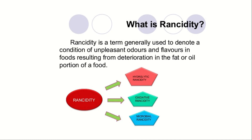Summary of rancidity: rancidity is a term generally used to denote a condition of unpleasant odor and flavor in food, resulting from deterioration in the fat and oil portion of the food. There are three types of rancidity — hydrolytic rancidity, oxidative rancidity, and microbial rancidity. As per your syllabus, only the types and definition are required.